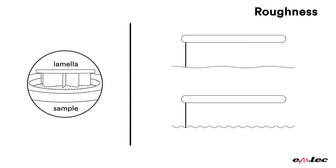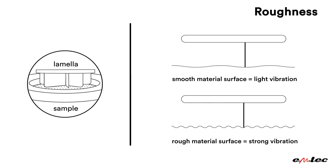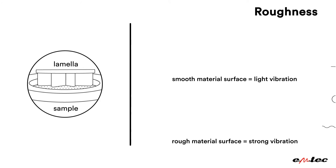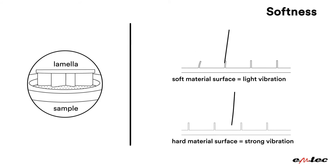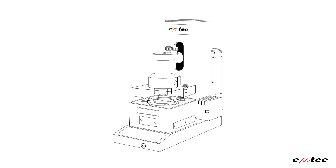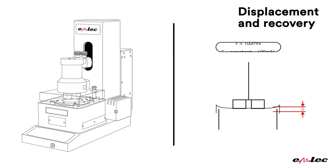In the first step, roughness and softness are measured. The vibration of the sample provides information about the roughness of the material, while the vibration of the lamella provides information about the softness.